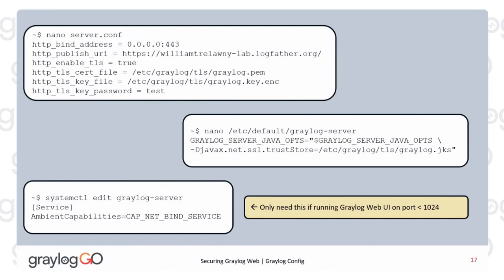Now we need to add a few lines to a few configuration files. The top one is greylog-server.conf — changing the bind address to port 443, which is optional. You can leave it at 9000, but I don't like putting port numbers in URLs. By extension, we need to change the publish URI. The publish URI is important because this is what your certificate needs to represent — William Trelawney-lab.logfather.org matches the wildcard pattern, so the certificate will work when I put this into my browser.